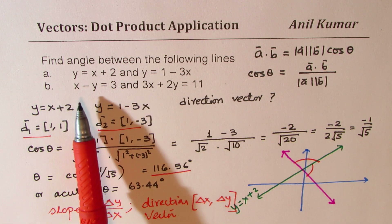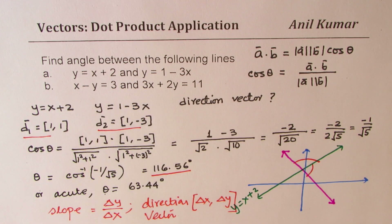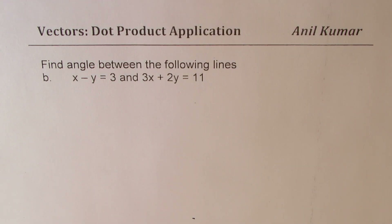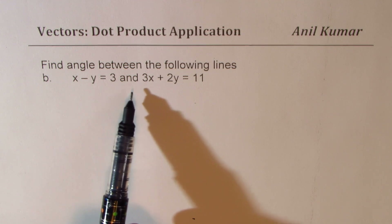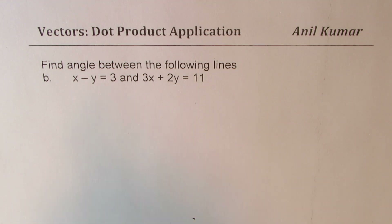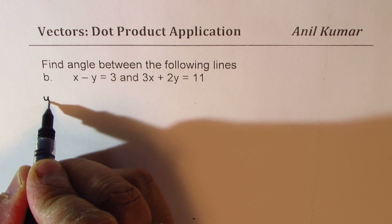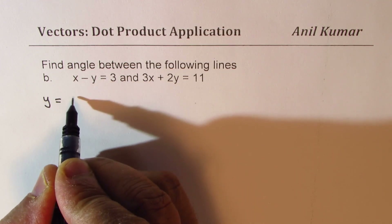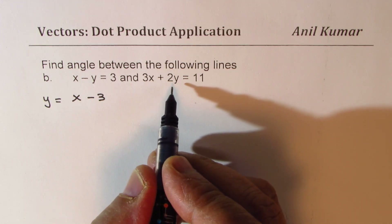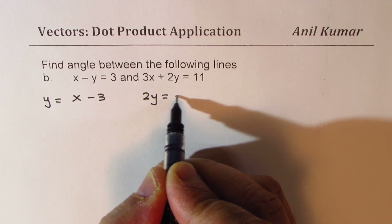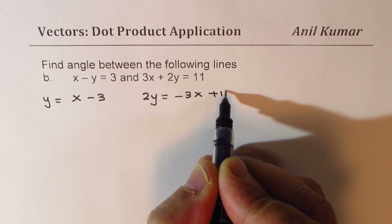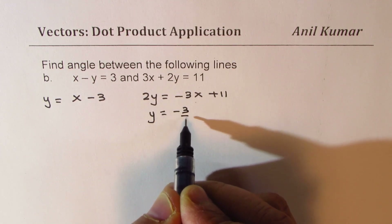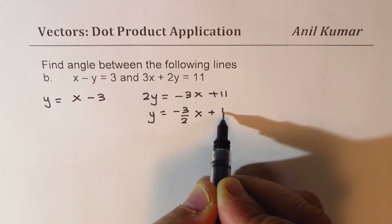You can pause the video, answer the second part as your practice question, and then look into my solution. Here is part B: we need to find the angle between lines x minus y equals to 3 and 3x plus 2y equals to 11. The first equation can be rewritten as y equals to x minus 3, and the second as y equals to minus 3 over 2 times x plus 11 over 2.